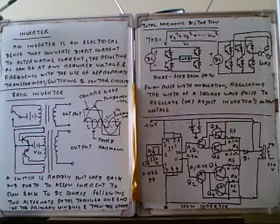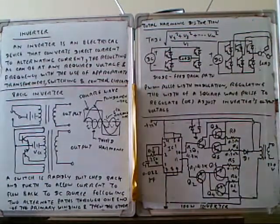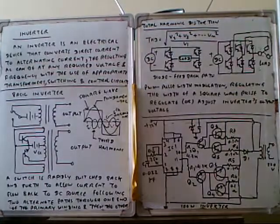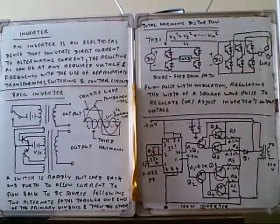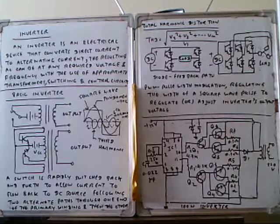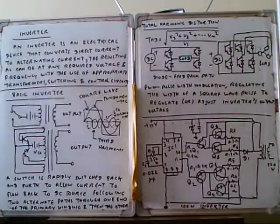An inverter is a device that changes direct current to alternating current. We use switching devices to change the switching rate, and the input is DC.